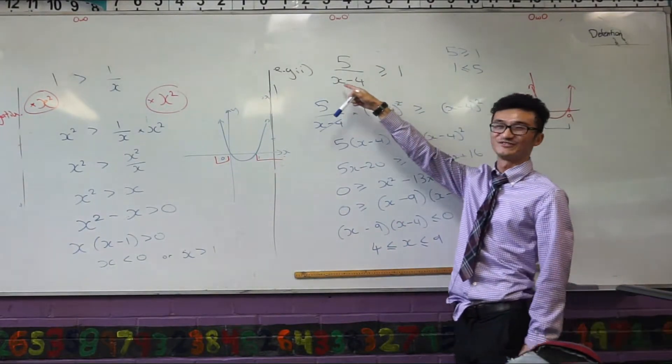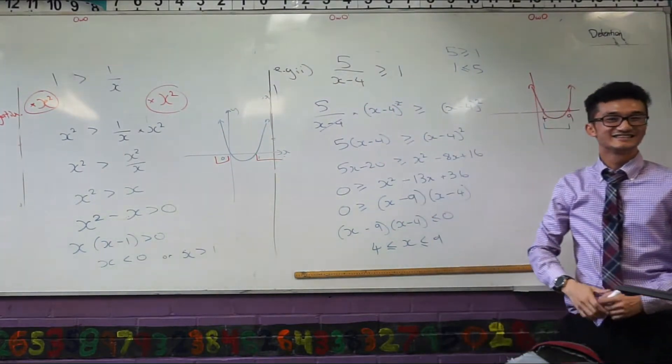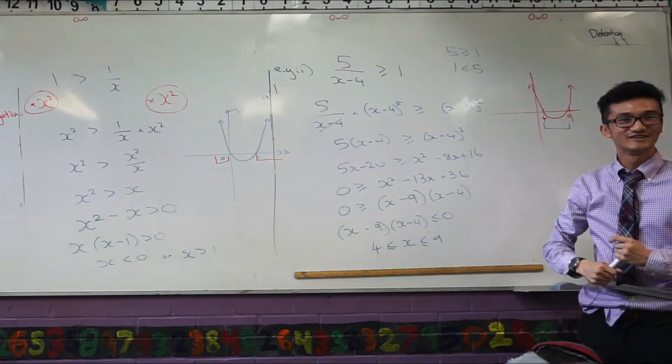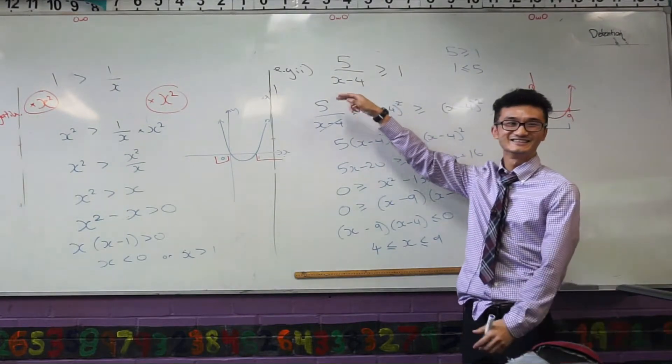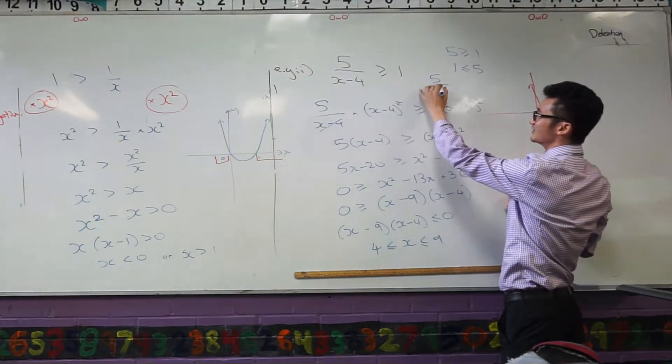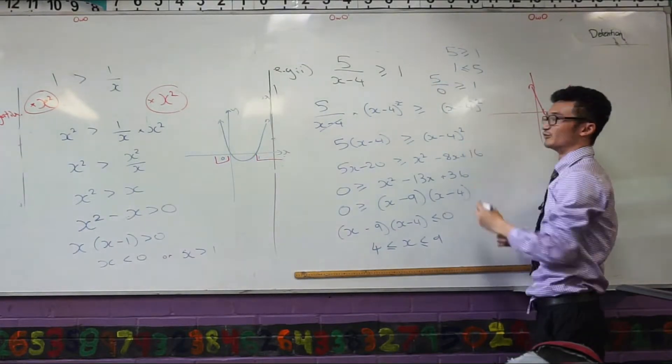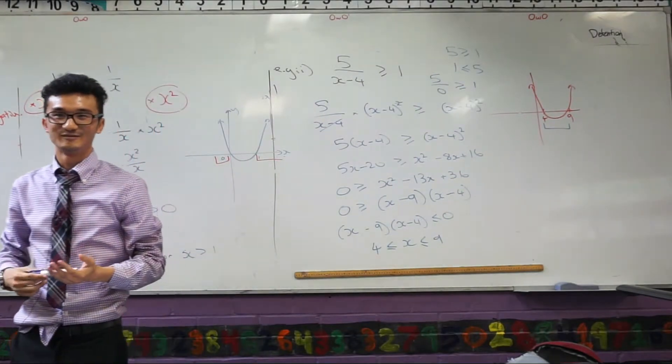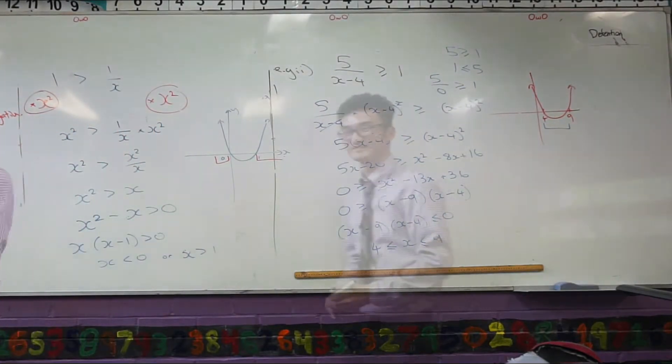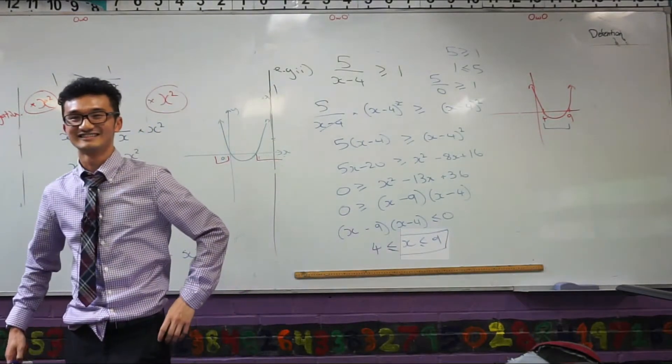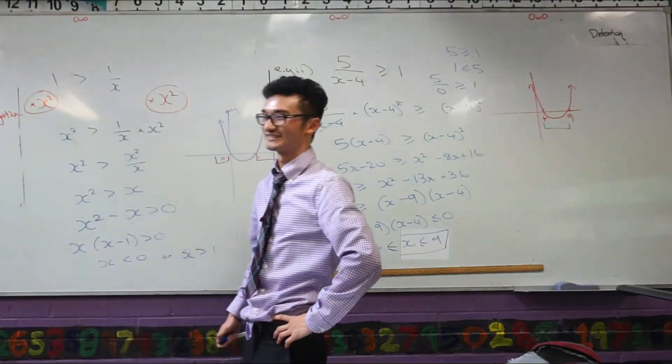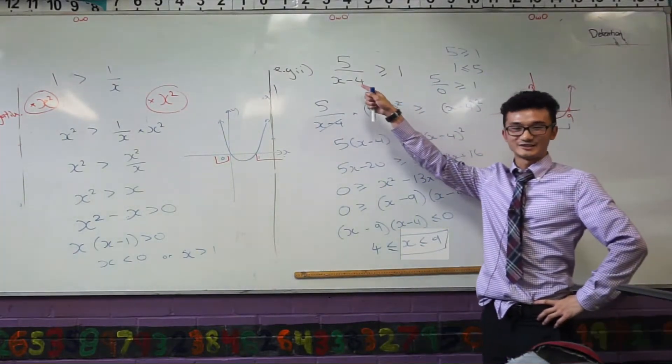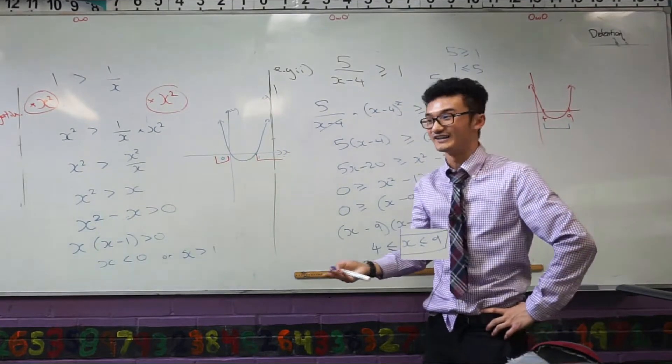Can you test this value for me? What happens when you put x equals to 4 in this answer? 5 over 4 minus 4 is 0. That needs to be bigger than or equal to 1. What's something divided by 0? Put it in your calculator. Math error. Technically speaking, x equals to 4, it's undefined. It doesn't exist.